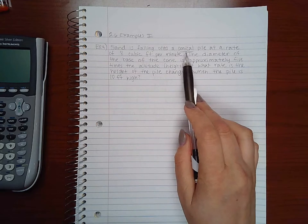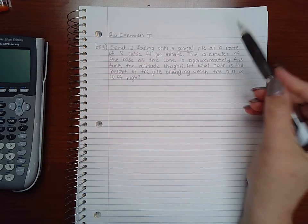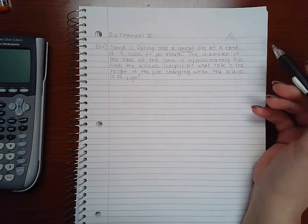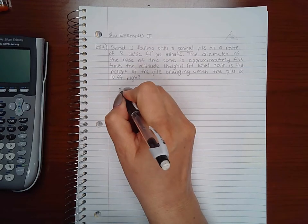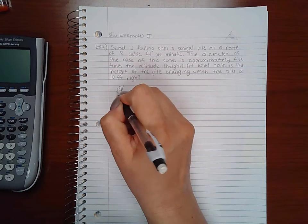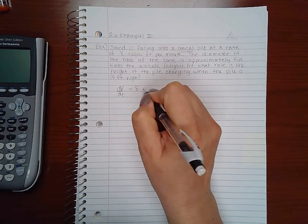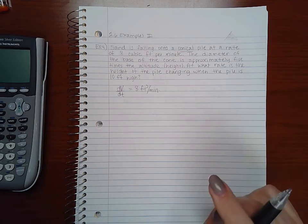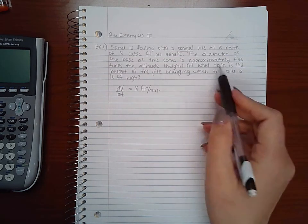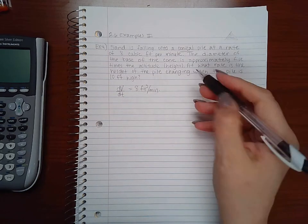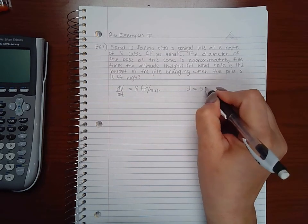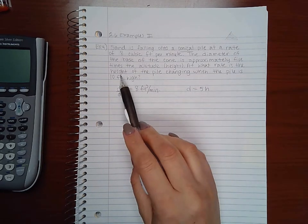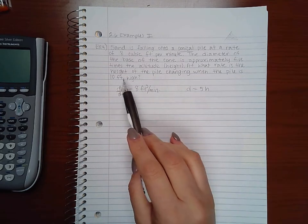Let's put this information together. The first sentence tells me that the sand is falling in a cone pile. If this is all full of sand and a cone is a three-dimensional figure, we're talking about the volume. So the derivative, the rate of the volume with respect to time, is 8 cubic feet per minute. The second sentence tells me that the diameter of the base of the cone is approximately five times the altitude, so my diameter is 5 times the height.